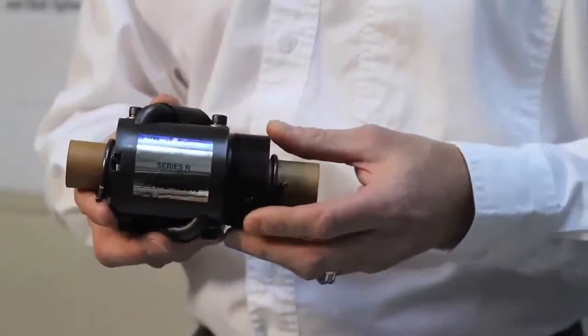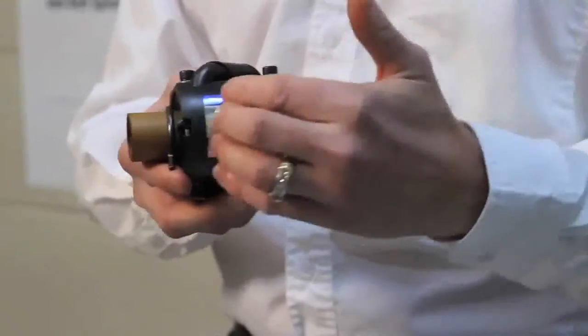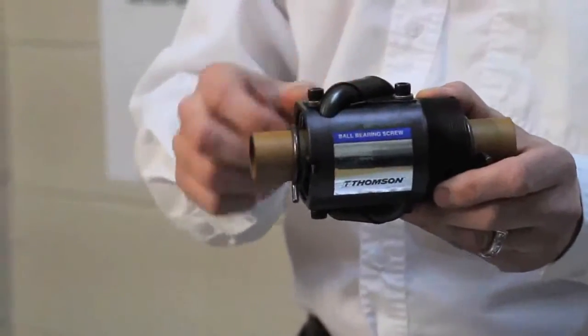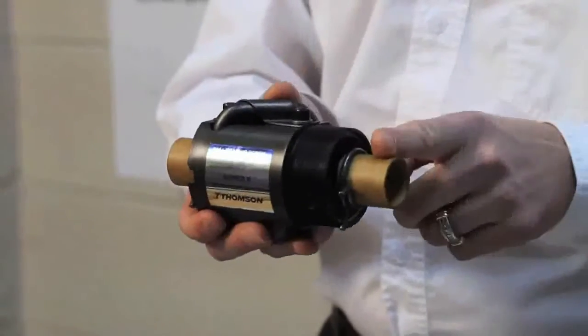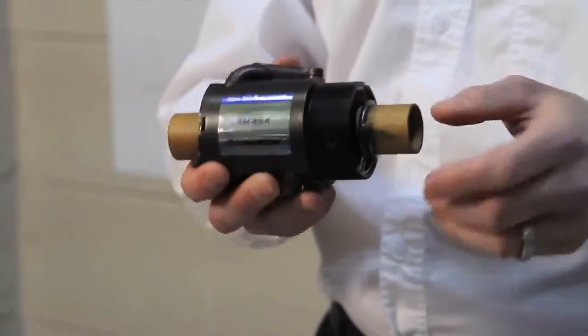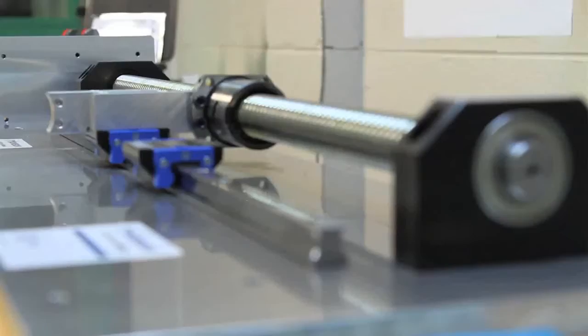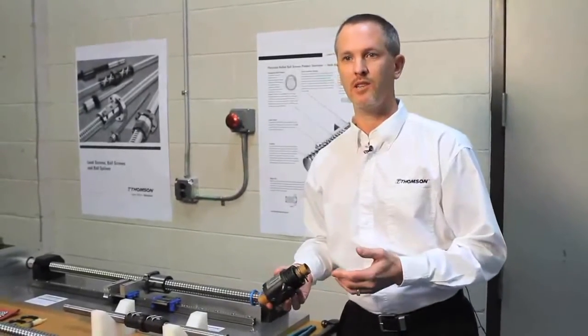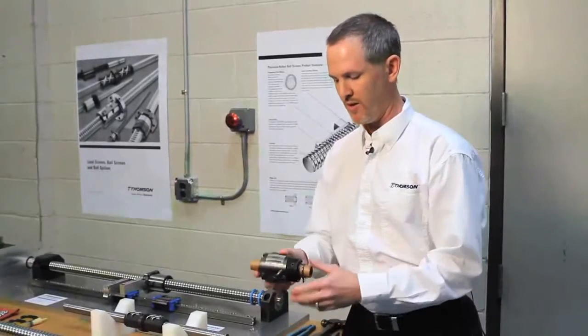It has all the major components of a ball nut, as you can see. The ball nut body itself, the return tube system, which in this case is an external tube. What this one's shipped on is called a shipping arbor, and the arbor is constrained inside the ball nut. When a customer receives a ball screw as components, they'll receive a screw and a nut.